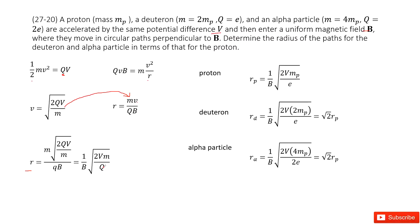Now we can solve it very easily. For the proton, the mass is mp and the charge Q is e, one unit charge. So Rp equals this.